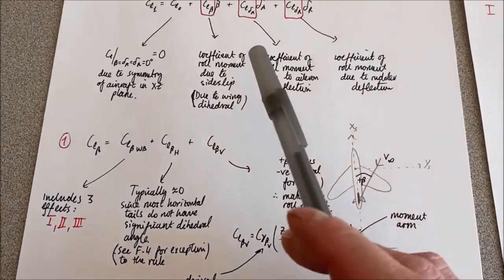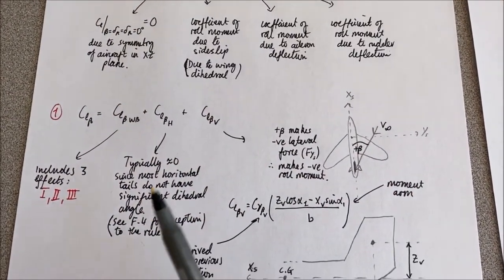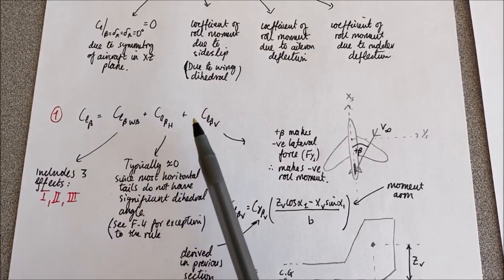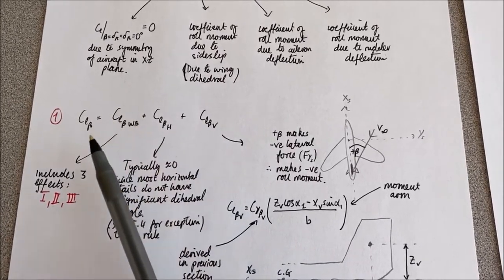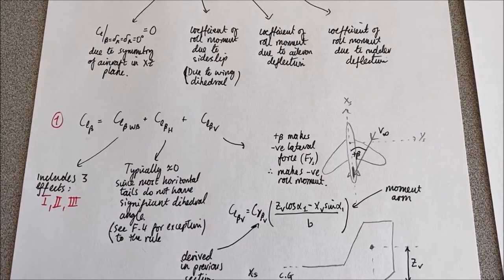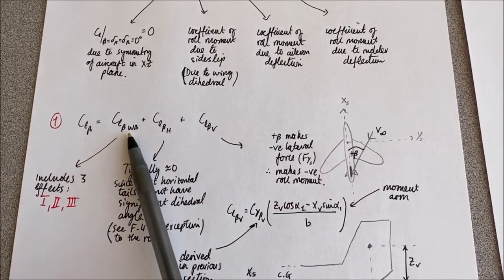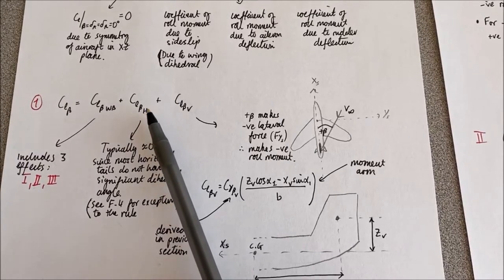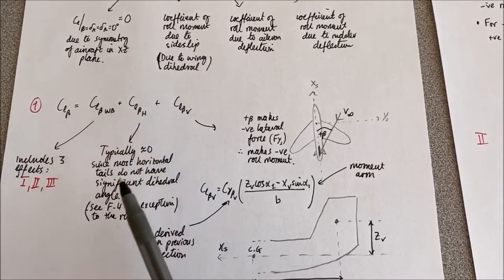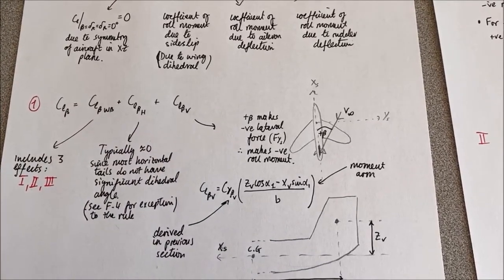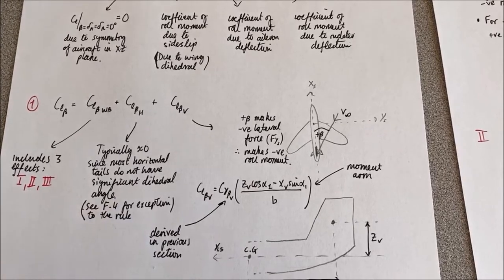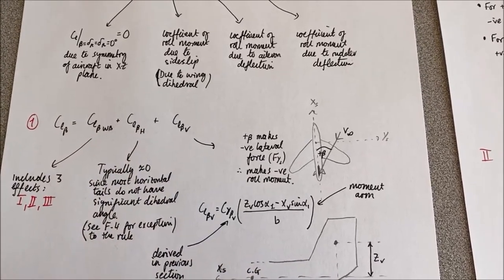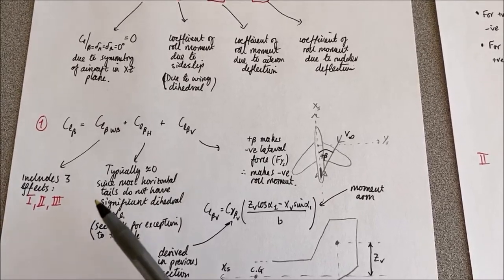Looking at the first term CL_beta, we can split it up into effects on the wing and body combined, the horizontal tail, and the vertical tail separately, then sum all of those to get a total CL_beta. The roll moment coefficient due to side slip on the horizontal tail is typically zero, unless we have a significant dihedral angle on the horizontal tail — the F-4 is an exception — but in general it is zero due to negligible dihedral angle.